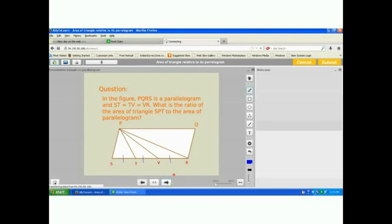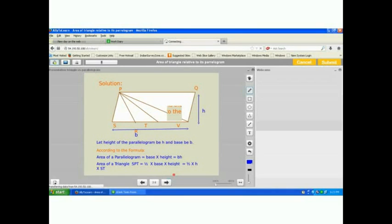To solve this sum, we start in this way. We take the height of the parallelogram as H and the base of the parallelogram as B. According to the formula, area of a parallelogram is base into height. So area of this parallelogram is BH square units.